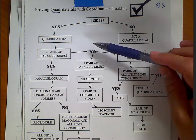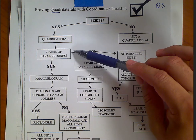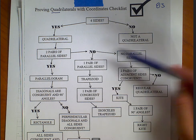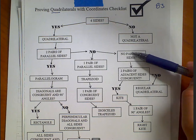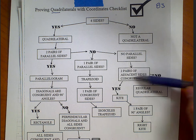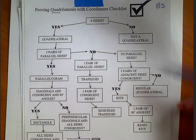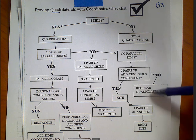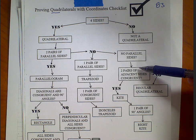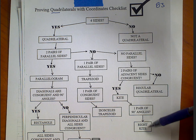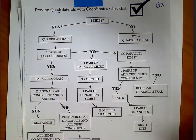Parallel means they need to have the same slope, so opposite sides need the same slope. If there are two pairs, go down that path. If there's one pair, go to trapezoids. No pairs leads to kites. Two pairs of adjacent sides congruent is the kite pathway. No pairs parallel, no sides congruent is a regular quadrilateral. One pair of 90-degree angles makes it a right kite.